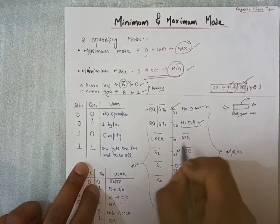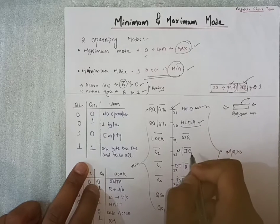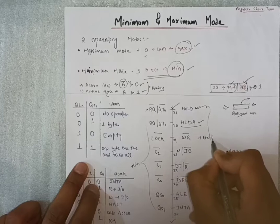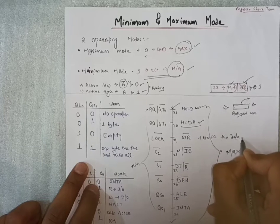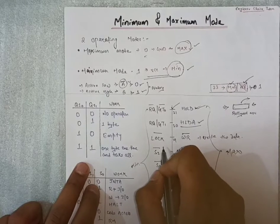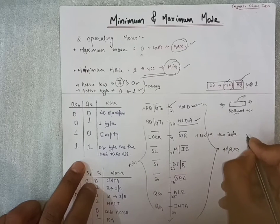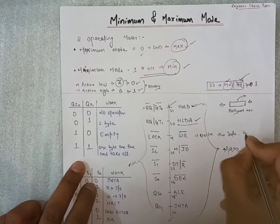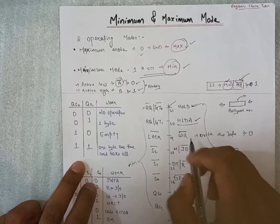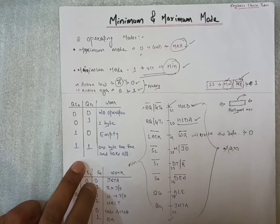After that, 29th number pin in maximum mode is write. It writes the data from memory. And it is actively low pin. When the value is zero, then only this write pin is going to work.